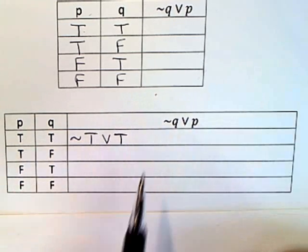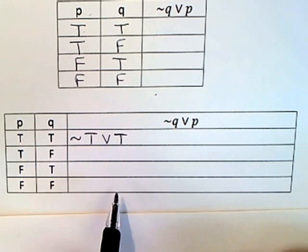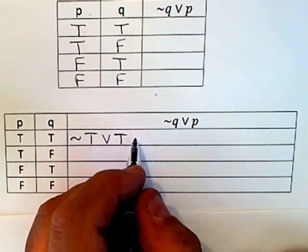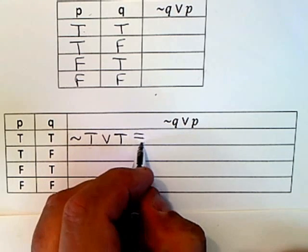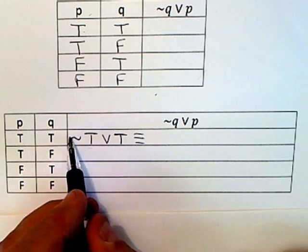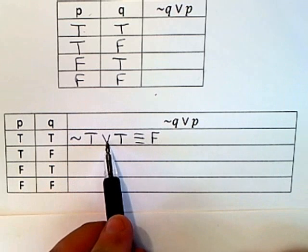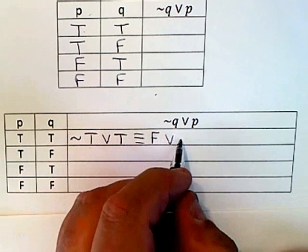I'm just putting the T's in in place of the statement names. Now of course we know that not true is false, so when I simplify that I would say this statement is equivalent to a not true is really false and then I've got or true.